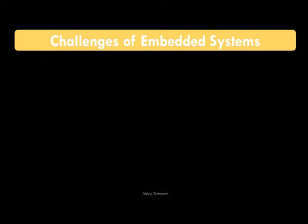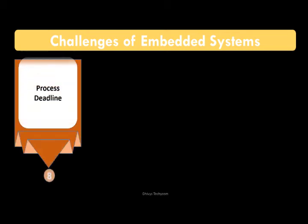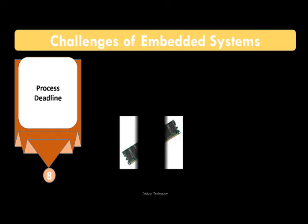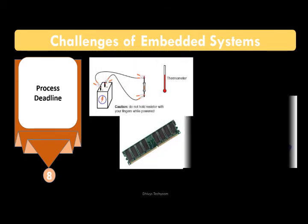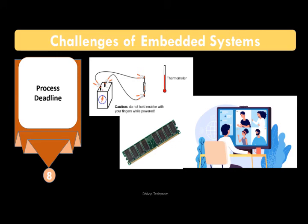The eighth important challenge is meeting process deadlines. This involves managing memory, power dissipation, and processing within required timeframes. The best example is video conferencing — we need to meet up with the deadline, though there can still be delays. Meeting the deadline is the eighth challenge in designing an embedded system.